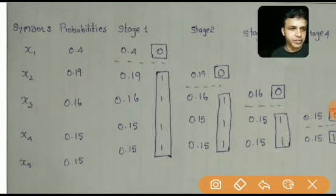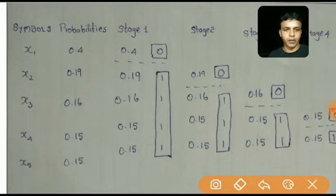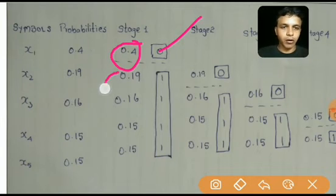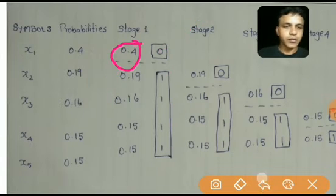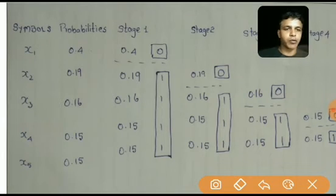I am dividing so that the upper part has only 0.4 and all remaining probabilities are in the lower part. The next step is to assign bit values: we assign 0 to the upper part and 1 to the lower part. So the probability 0.4 gets the value 0, and all other probabilities in the lower part get the value 1.